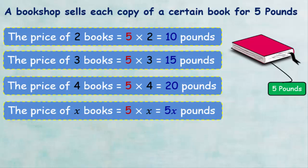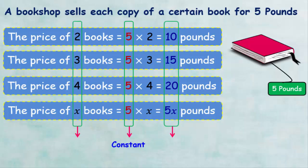If you pay attention, you find that the price of one book is 5 pounds and doesn't change every time, so we say that the price of one book is a constant. As for the number of books and the price of books, these change every time. If the symbol X refers to the number of books and symbol Y refers to the total price, we say that the number of books and their total price are variables.